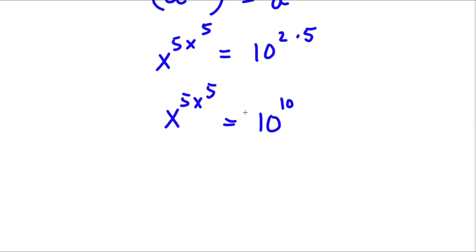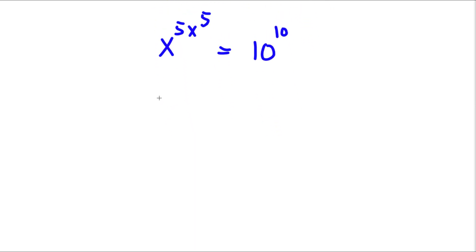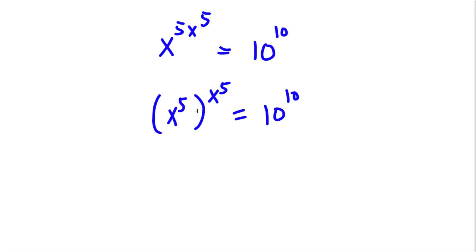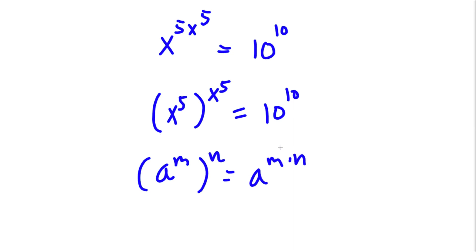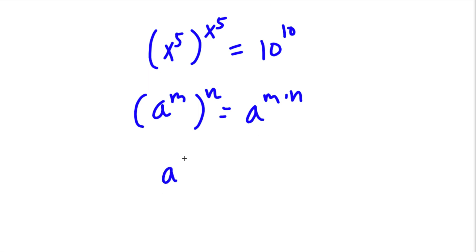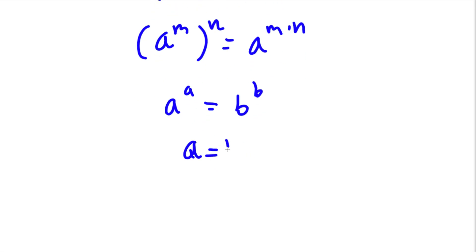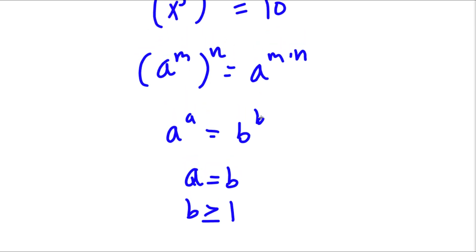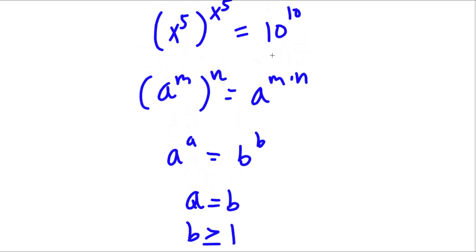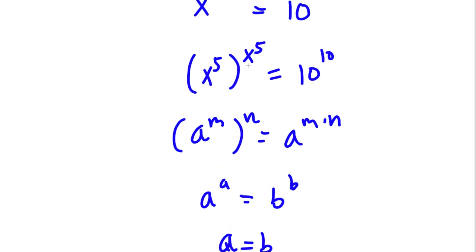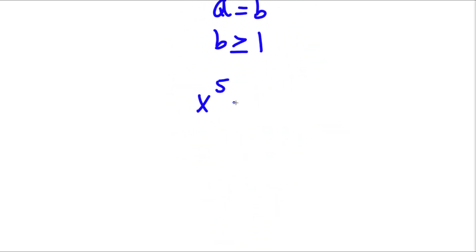Now, I can rewrite x to the power of 5x to the power of 5 as x to the power of 5 to the power of x to the power of 5, and this is equal to 10 to the power of 10. Now, if I have something in the form a to the power of a is equal to b to the power of b, then this means that a is equal to b, as long as b is greater than or equal to 1. And in this case, b is 10, which is greater than or equal to 1. So now I have x to the power of 5 is equal to 10.